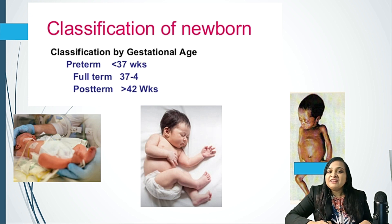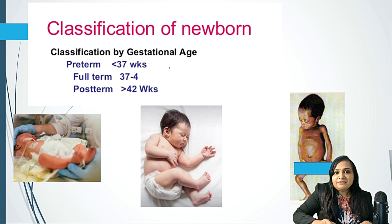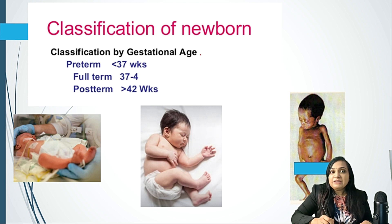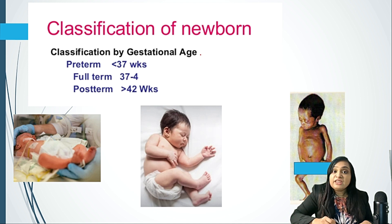How do we classify the newborn? First of all, the neonate is from birth till 28 days of life. One important classification of the newborn is as per gestational age — how old they are. In obstetrics and gynecology we use months of amenorrhea, but that is not applicable to newborns. For a newborn, we always talk about gestational age in reference to weeks.